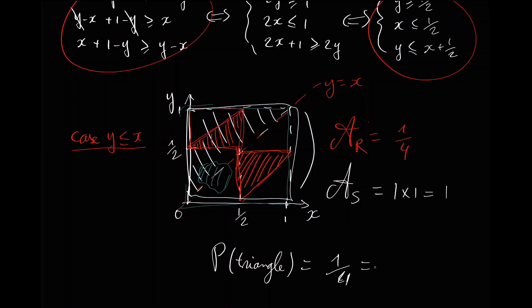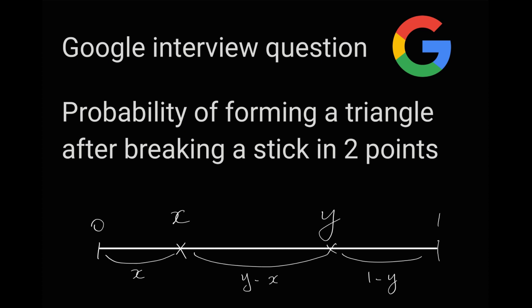That is 25%. As you can see, this demonstration gives a nice visual representation of the 25% probability based on the position of the first and second breakpoints, represented on a two-dimensional space. Thanks a lot for watching this video. Please don't forget to like it if you enjoyed it, and let me know in the comments if you have another demonstration for this nice interview question.